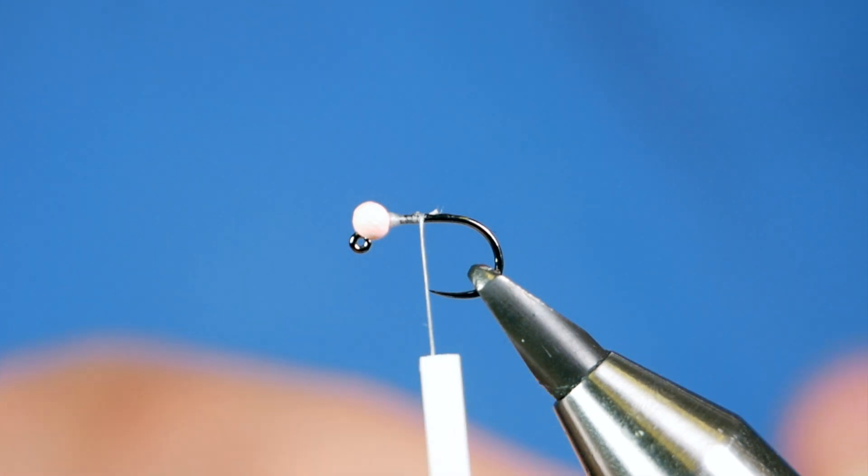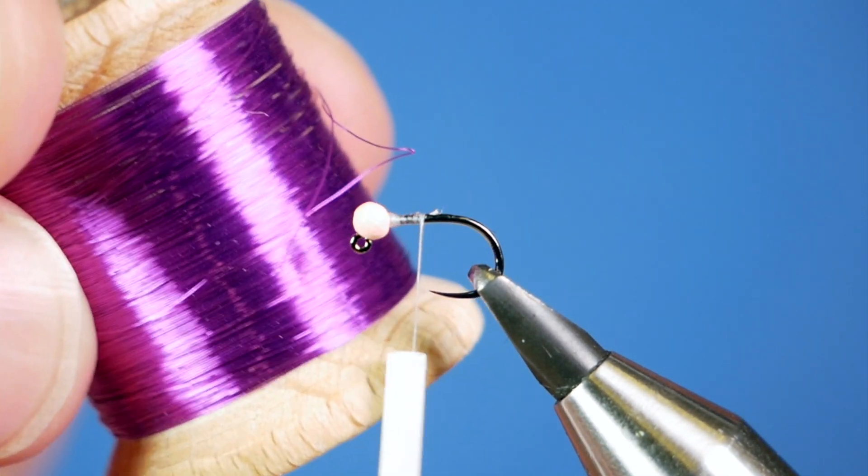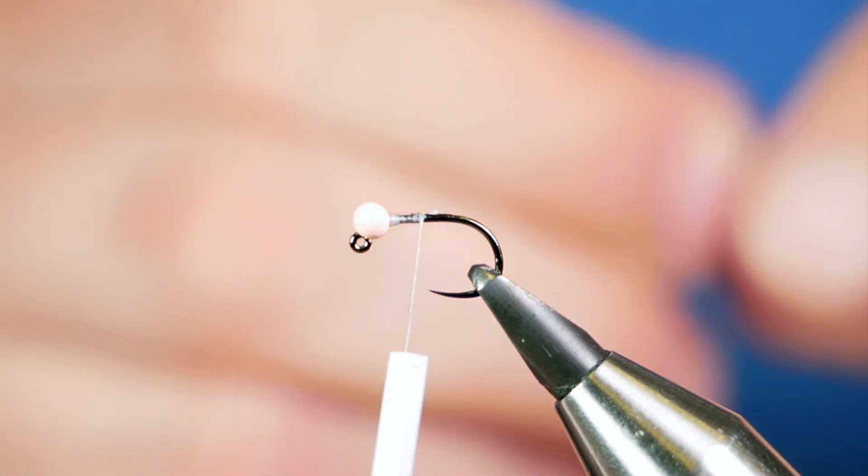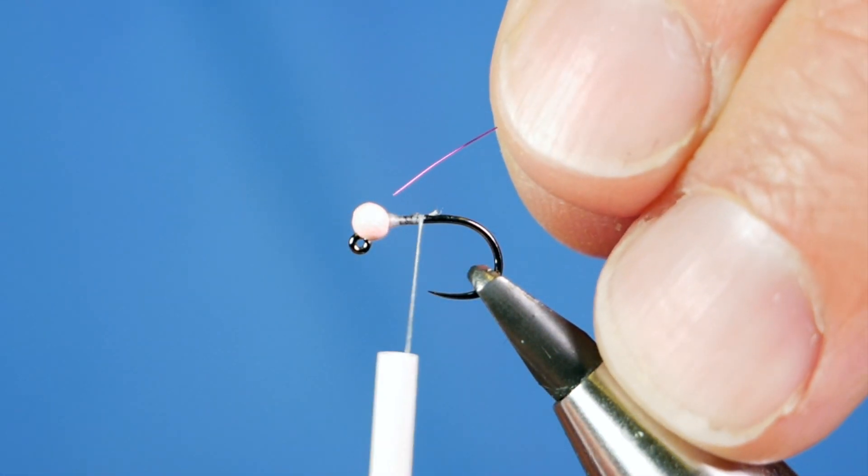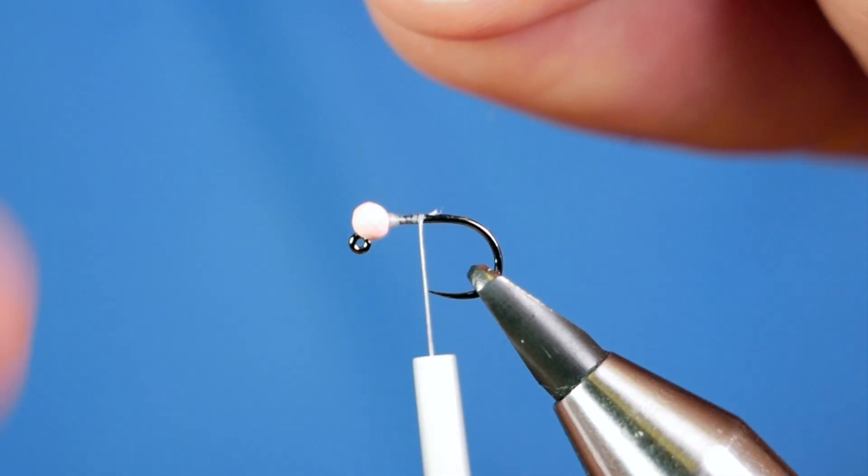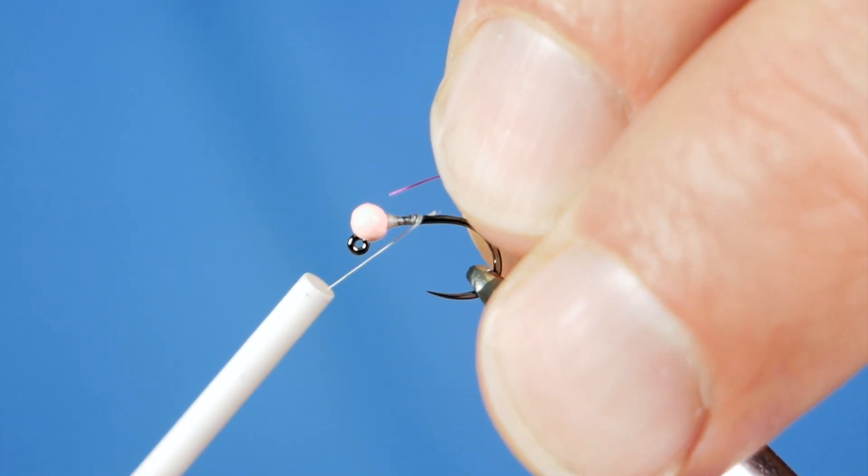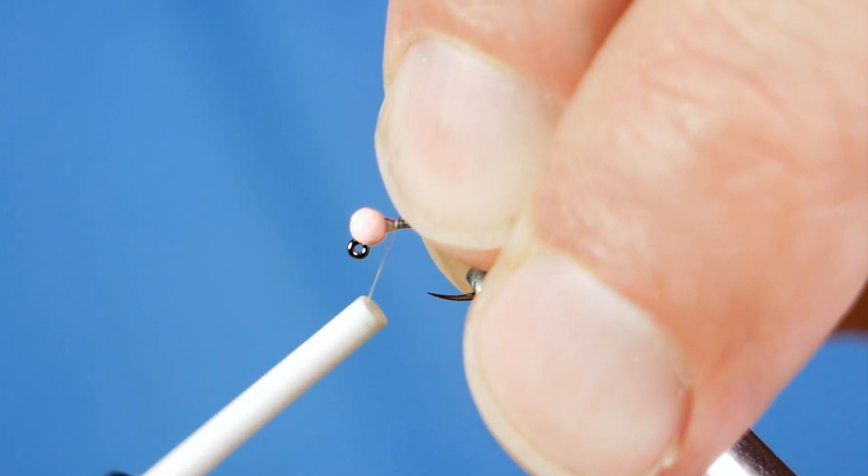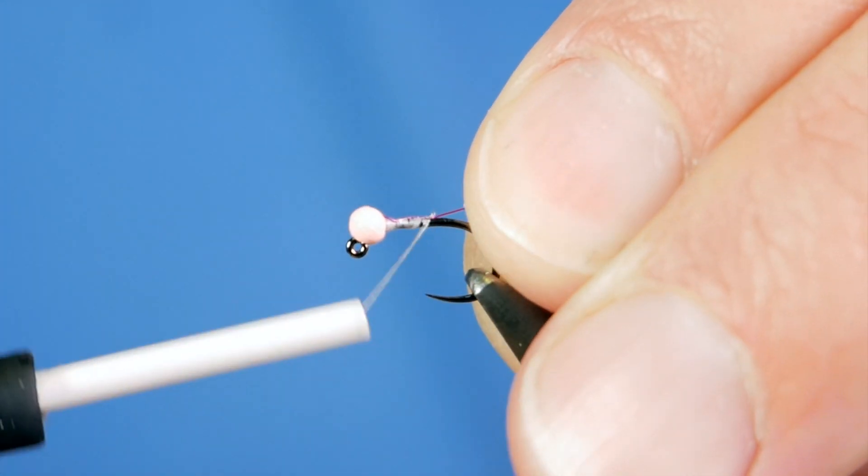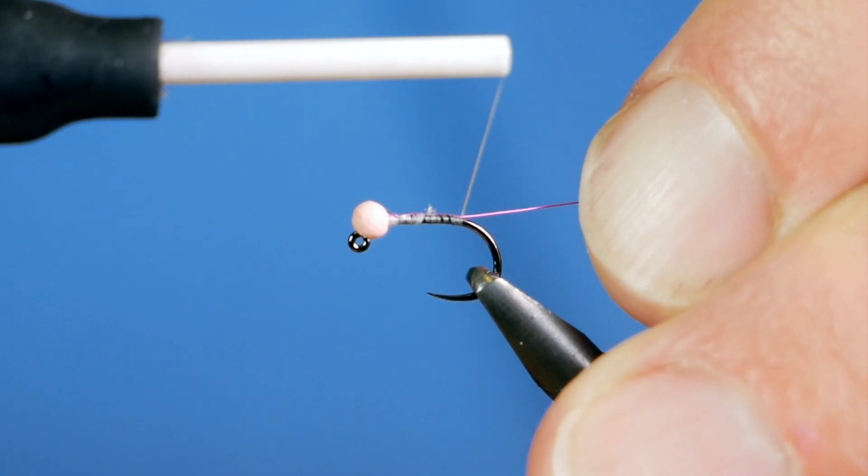Now, I'm going to add my wire rib next. And what I'm using is some Trout Lines Purple Wire Ribbing. I've already got a little section pulled off. And I'm going to catch that in. And what I always like to do is insert it into the eye and catch it in. I just think it adds another little tiny bit of weight, although that's negligible at this point.